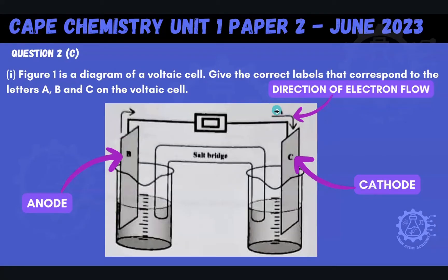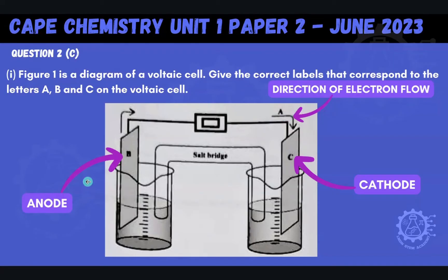And then, of course, where are these electrons coming from? They have to be coming from somewhere — in fact, they're coming from over here. So B would then be our anode. The anode is where electrons leave from, and the cathode is where electrons enter. The direction of electron flow is always going to be from our anode into our cathode. So if you had said A is electrons or direction of electron flow, B is anode, and C is cathode, you would have gotten all the marks there.